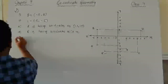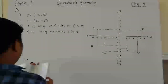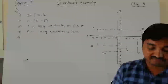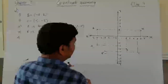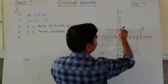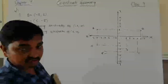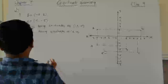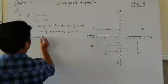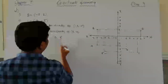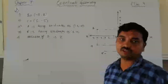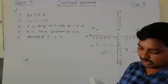The fifth part asks for the abscissa — that is, the x-coordinate — of point D. The coordinates of D are 6 comma 2. The x-coordinate is 6, so the abscissa is 6. If you write 2 your answer will be wrong because 2 is the ordinate. He is asking for the abscissa, so the answer is 6.